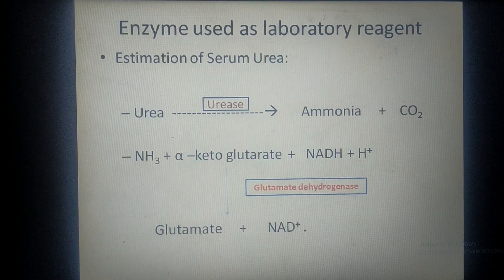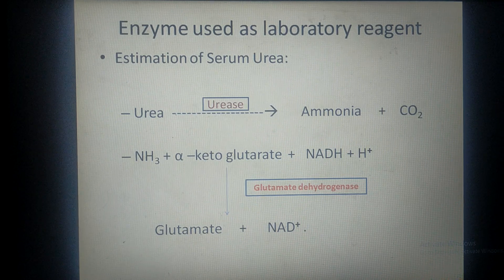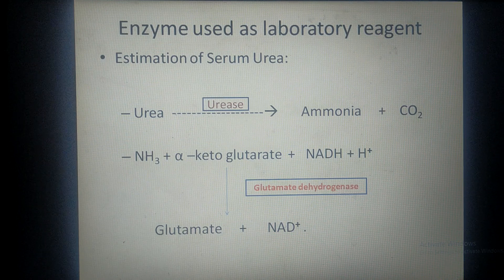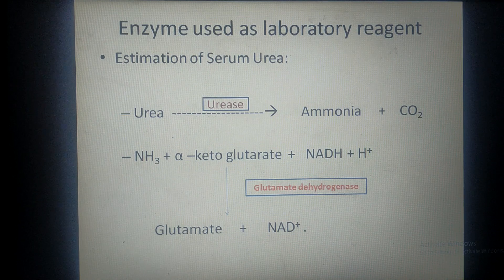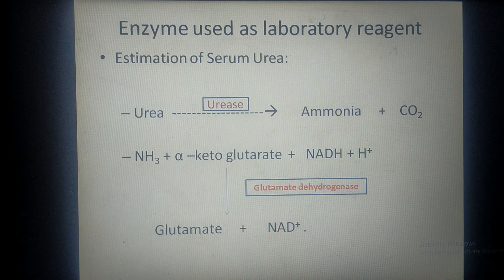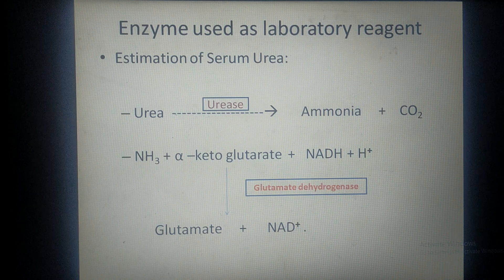One more example is estimation of urea, which is also a practical you have to perform. In this case, two enzymes are used. The first is urease, which acts on urea and breaks down the urea present in serum into ammonia and carbon dioxide. This ammonia then combines with alpha-ketoglutarate and reduces NADH in the presence of the enzyme glutamate dehydrogenase to form glutamate and oxidized NAD.